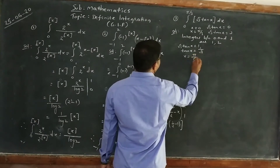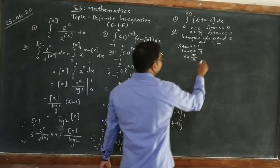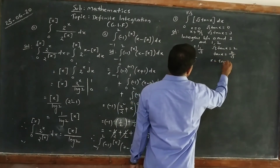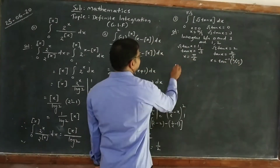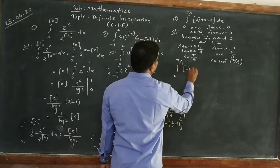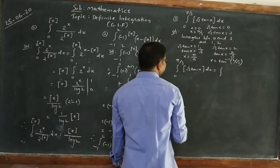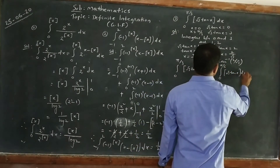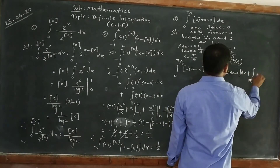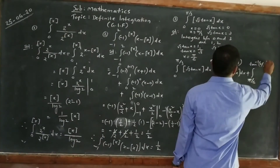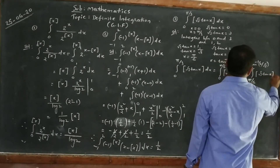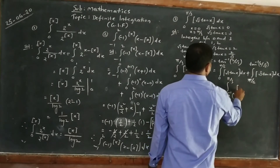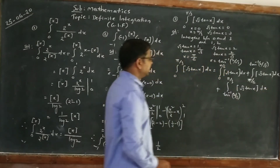Next, √3 tan x = 2 gives tan x = 2/√3, so x = tan⁻¹(2/√3). Therefore, the integral splits as: integral from 0 to π/6 of [√3 tan x] dx, plus integral from π/6 to tan⁻¹(2/√3) of [√3 tan x] dx, plus integral from tan⁻¹(2/√3) to π/3 of [√3 tan x] dx.